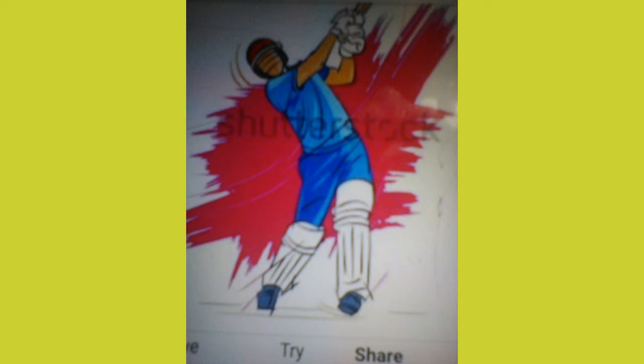Important terms of cricket. 1. Striker: a batsman currently playing — the present player. The batsman at the opposite end is called the non-striker.